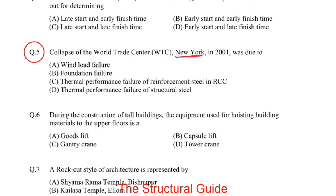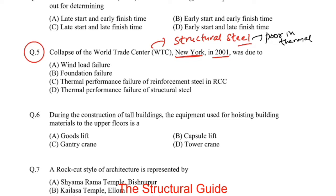The next question: the collapse of the World Trade Center in New York in 2001 was due to? As you know, the World Trade Center was at the time the highest tower in the world, and it was made up of structural steel. Structural steel is poor in thermal resistance. So the failure of the World Trade Center is due to poor thermal performance of the structural steel.